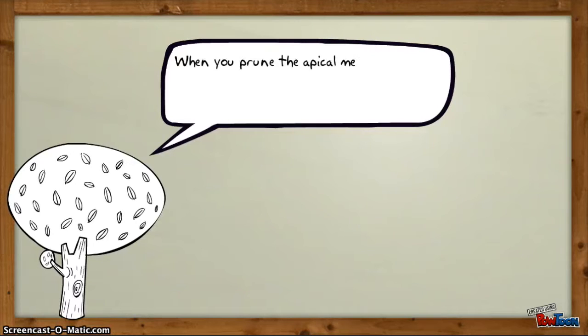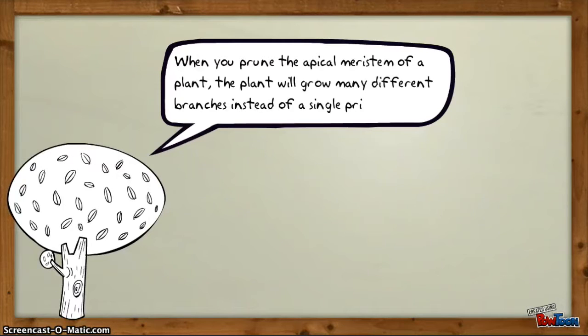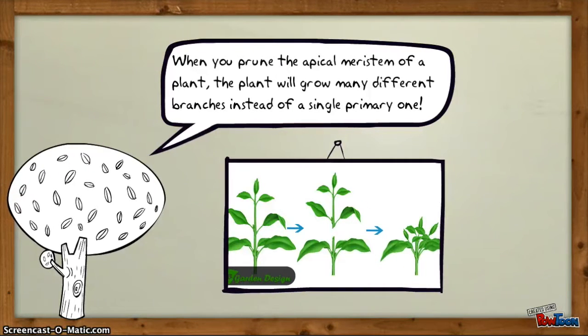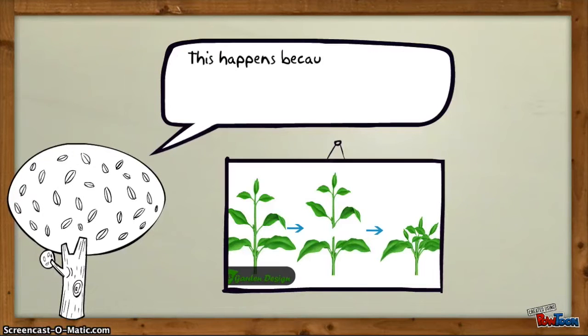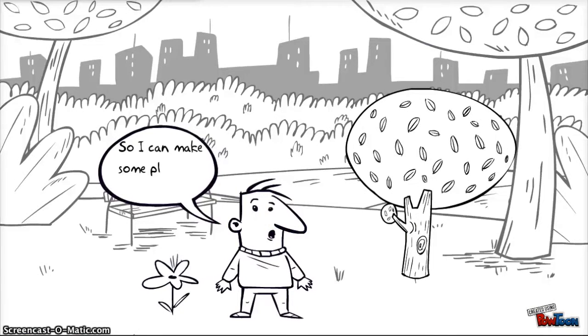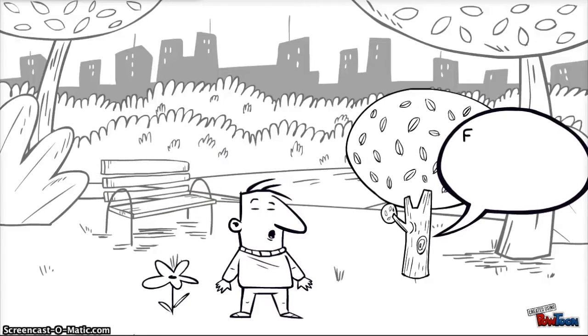To prune the apical meristem of a plant, the plant will grow many different branches instead of a single primary one. This happens because by cutting the apical meristem, you remove the auxin. So I can make some plant bushier. For sure, but that's not all auxin can do.